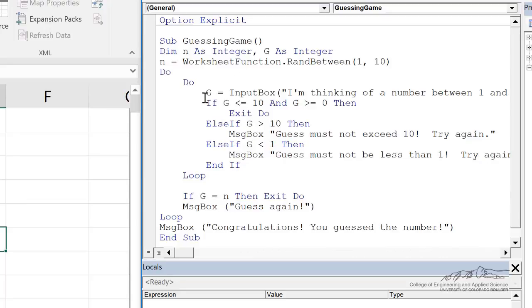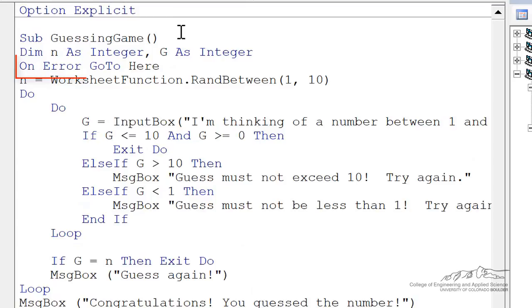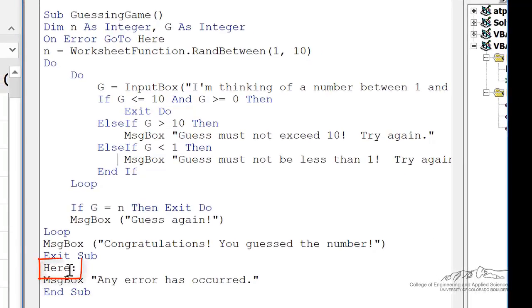One way to deal with this, it's sort of just a catch-all. If there's any sort of errors that occur, you can use this on error go to statement. So I've set that up. I've put this on error go to here at the very top underneath my dim statement. If there's any sort of error in the code, it's going to bump to a bookmark that you define called here.